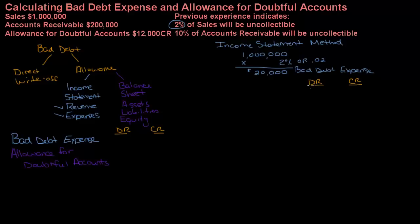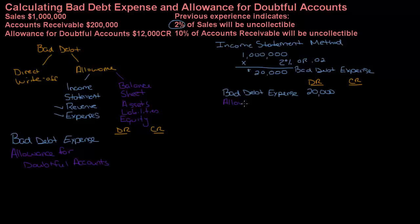So if I'm going to do my journal entry — I'm going to keep this color coded — bad debt expense is a twenty thousand dollar debit because it's an expense and the expense is increasing. And allowance for doubtful accounts is going to be credited twenty thousand. That's my journal entry: I'm using an amount from the income statement to calculate the income statement item.